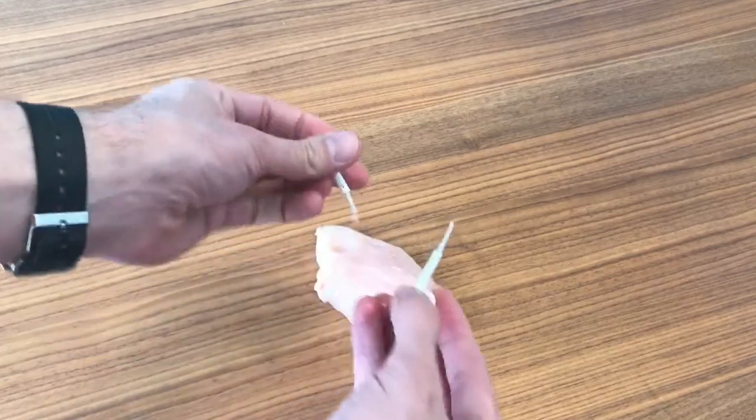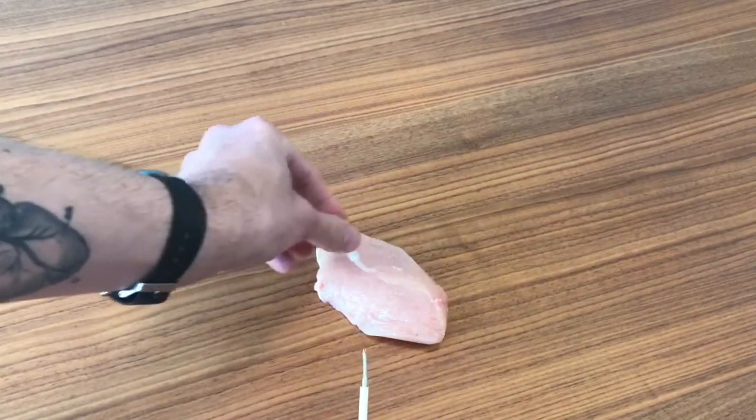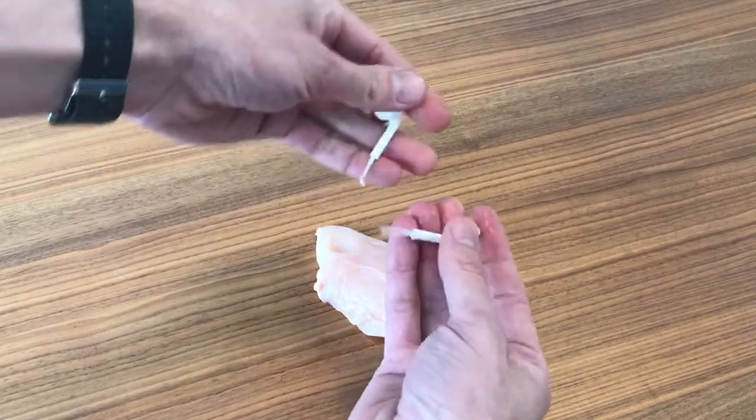Last, rub the ends on a raw chicken breast. This will set the charge. Wait 24 hours before using.